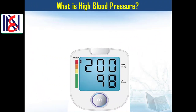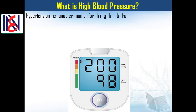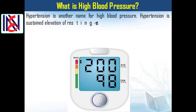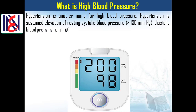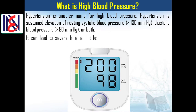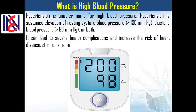What is high blood pressure or hypertension? Hypertension is another name for high blood pressure. It is a sustained elevation of resting blood pressure where systolic blood pressure is greater than or equal to 130 mmHg, diastolic blood pressure is greater than or equal to 80 mmHg, or both. It can lead to severe health complications and increase the risk of heart disease, stroke, and sometimes death.